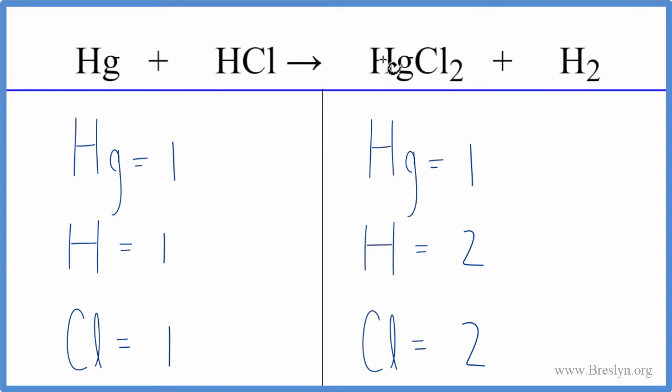So we're going to change the coefficients to balance the equation. And we can see we have one hydrogen here and two here. So we need to change the coefficient in front of the HCl to two. That way we have one times two. That'll give us the two hydrogen atoms.